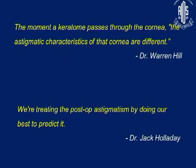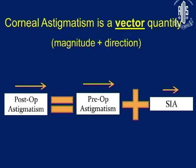According to Warren Hill, the moment a keratome passes through a cornea, the astigmatic characteristics of that cornea are different. Corneal astigmatism is not a simple addition or substitution of corneal astigmatism — it is a vector quantity. It comprises magnitude plus direction.